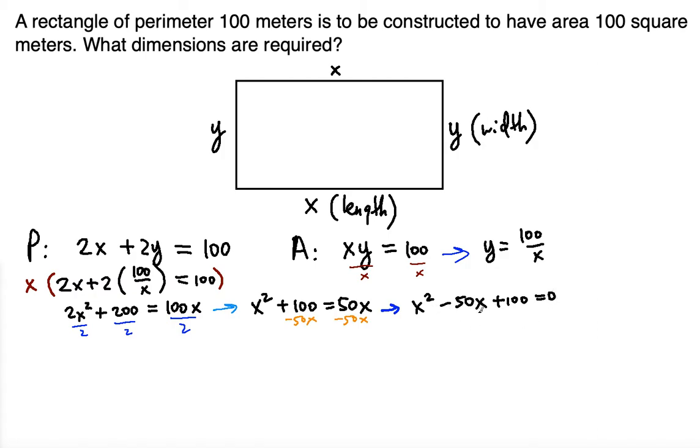Now the left side cannot be factored but we can use the quadratic formula. Quadratic is minus b, in this case b is negative 50 so it's going to be a negated version of that, minus b plus minus. Inside the square root is the discriminant b squared minus 4ac. b squared is going to be this thing squared minus 4ac. So a is 1 and the c is 100. And all of this must be divided by twice the a, twice the 1.